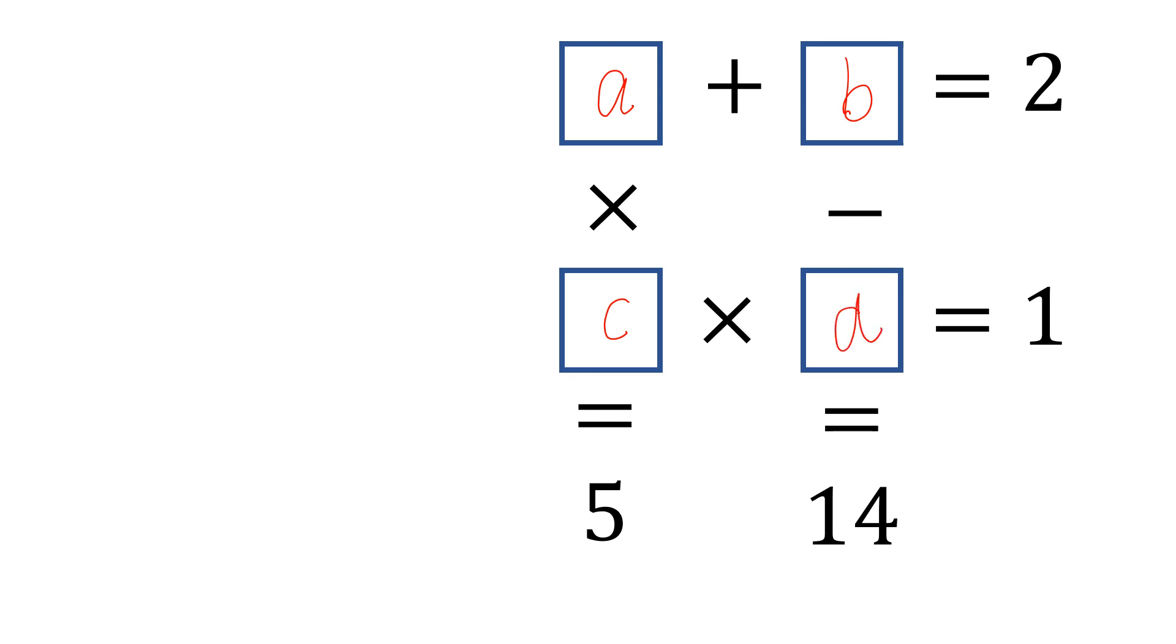We can write equations: A plus B is equal to 2. This can be written as AC is equal to 5. Then B minus D is equal to 14, and CD is equal to 1.